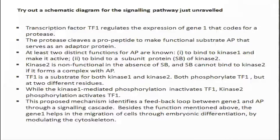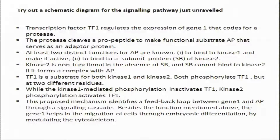TF1, the transcription factor, is a substrate for both kinase 1 and kinase 2. Both phosphorylate TF1, but at two different residues. While kinase 1-mediated phosphorylation inactivates TF1, kinase 2 phosphorylation activates TF1 - it is a very different kind of regulation. This proposed mechanism identifies a feedback loop between gene 1 and AP through a signaling cascade. Besides the function mentioned above, gene 1 helps in migration of cells through embryonic differentiation by modulating the cytoskeleton. Each person would have understood some points, but it is very difficult to connect all of them because everything is written in textual form.